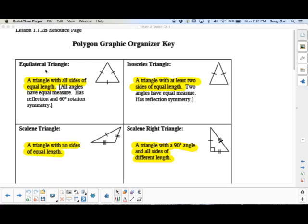Our first polygon is called an equilateral triangle, and that's defined as a triangle with all sides of equal length. So we mark that with these three marks you see right here. By the way, anything that's highlighted in yellow means it's part of the definition of that figure. If it's not highlighted, it's a characteristic of it, but it's not necessarily part of the definition. So for instance, an equilateral triangle, all angles have equal measure. It also has reflection and 60-degree rotation symmetry. But really all you need to do for now is write what's in yellow.